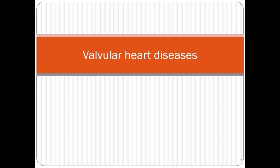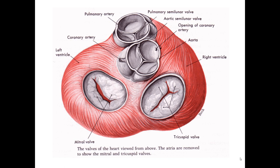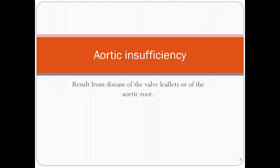This lecture will talk about valvular heart disease and the surgical aspect. Regarding the anatomy of the heart valves: we have four valves. Two are atrioventricular valves — on the left side between the left atrium and left ventricle there is the mitral valve, composed of two leaflets (anterior and posterior), and between the right ventricle and right atrium there is the tricuspid valve, composed of three leaflets. We also have the pulmonary and aortic valves, each with three cusps. Aortic insufficiency results from diseases of the valve leaflets or of the aortic root.